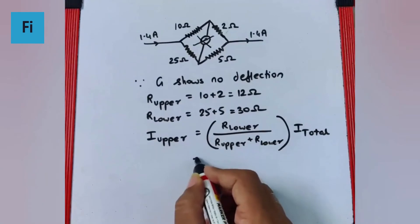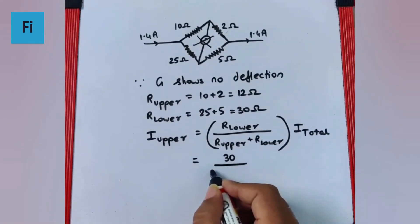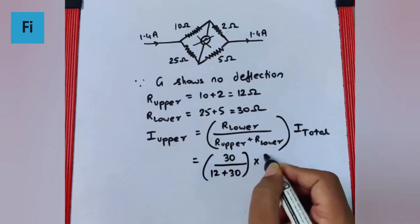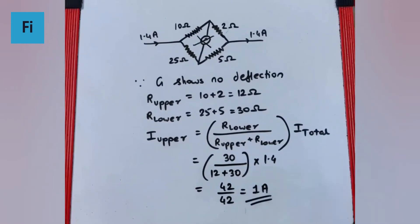So that is going to be 30 upon 12 plus 30 into 1.4, so that is like 14 into 3, that is going to be like 42 upon 12 plus 30 is also 42, that is 1 ampere, and that will be our final answer.